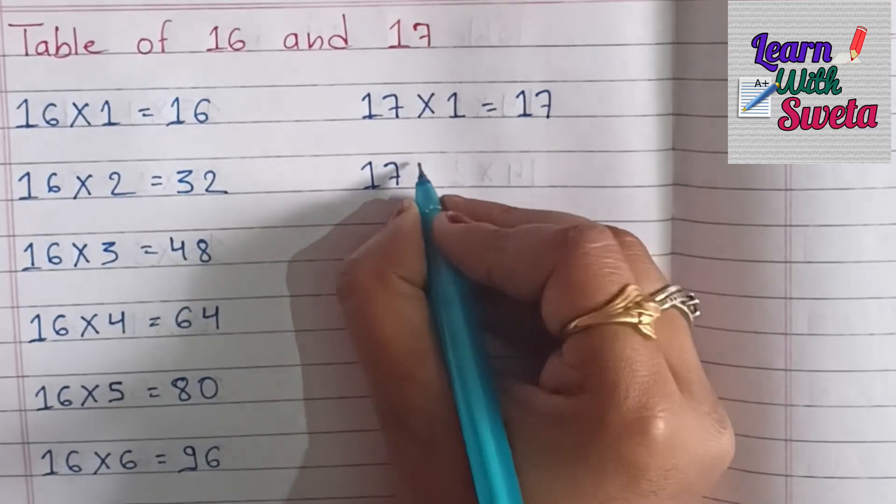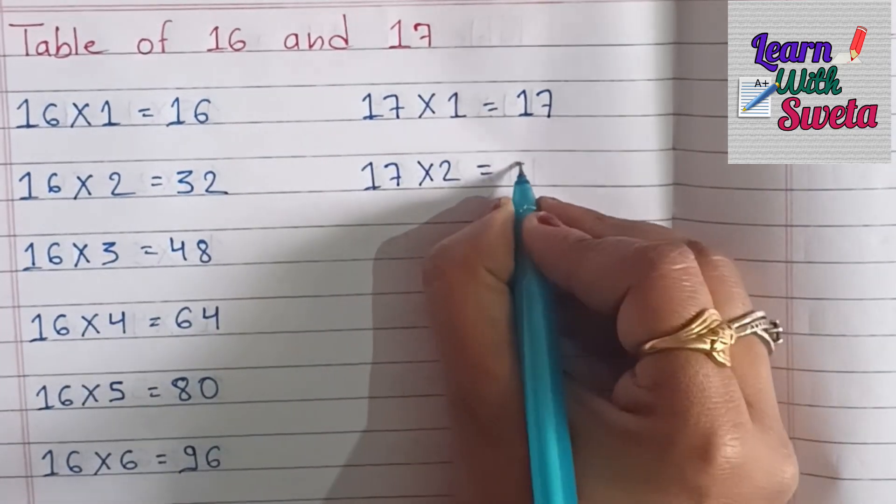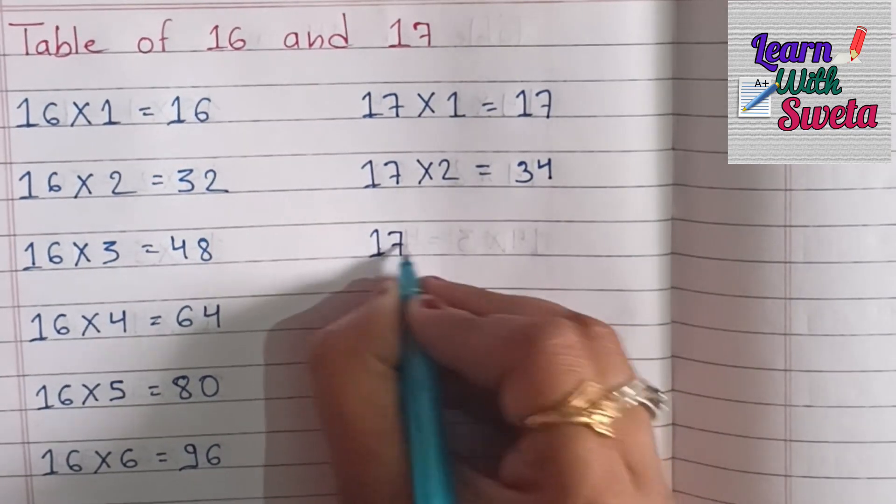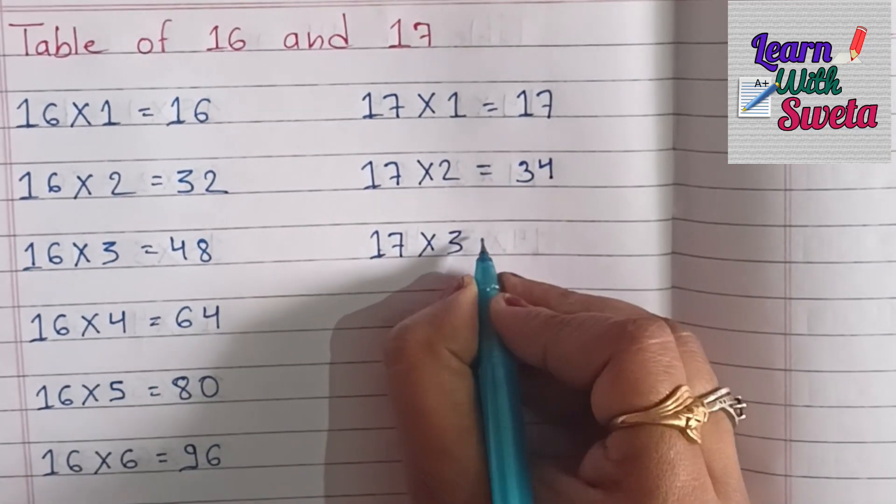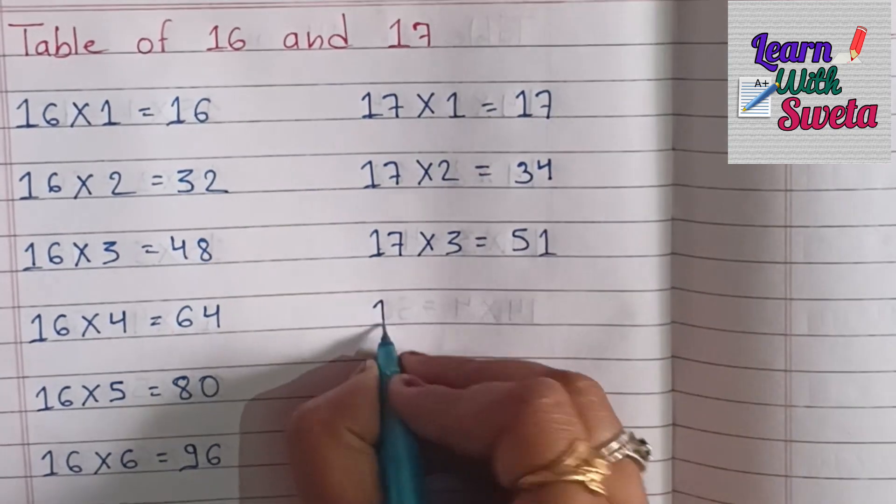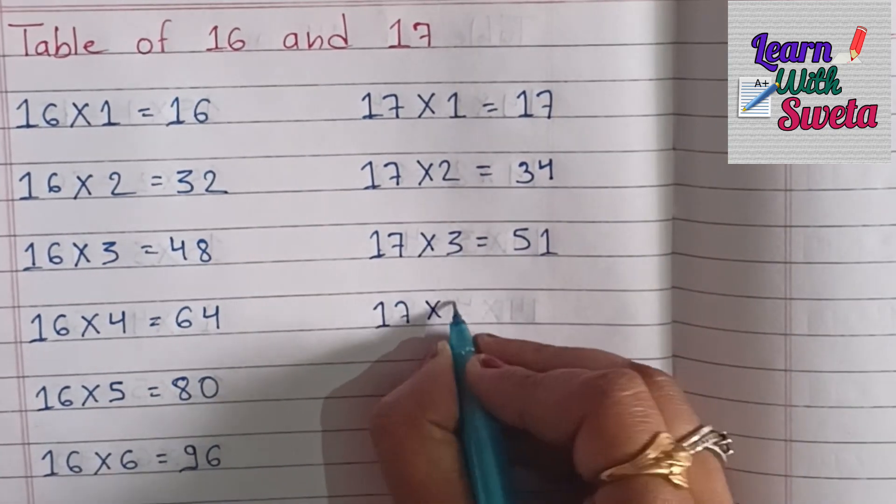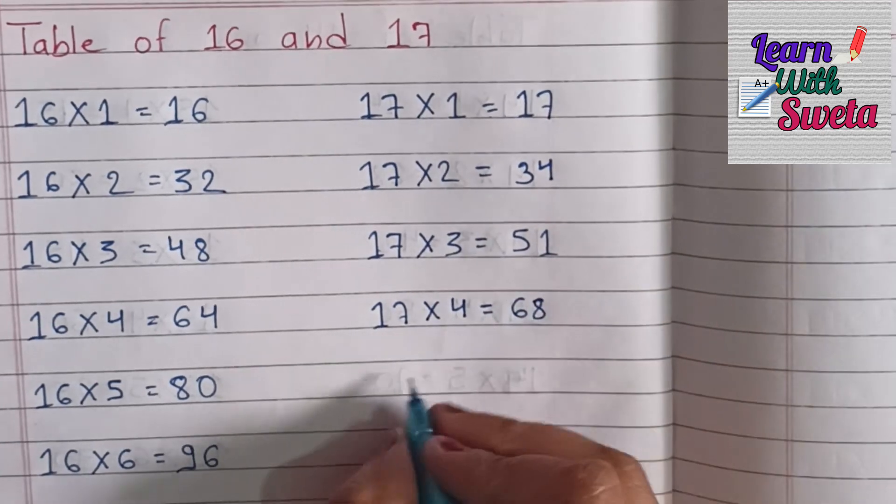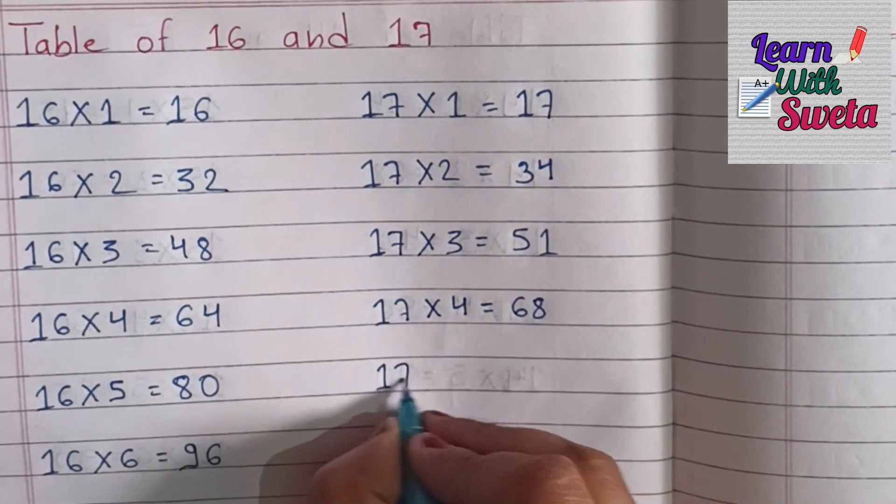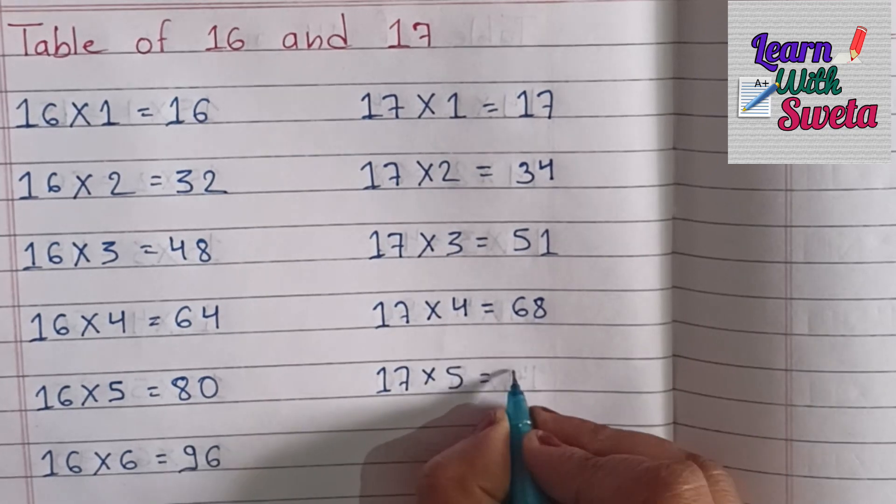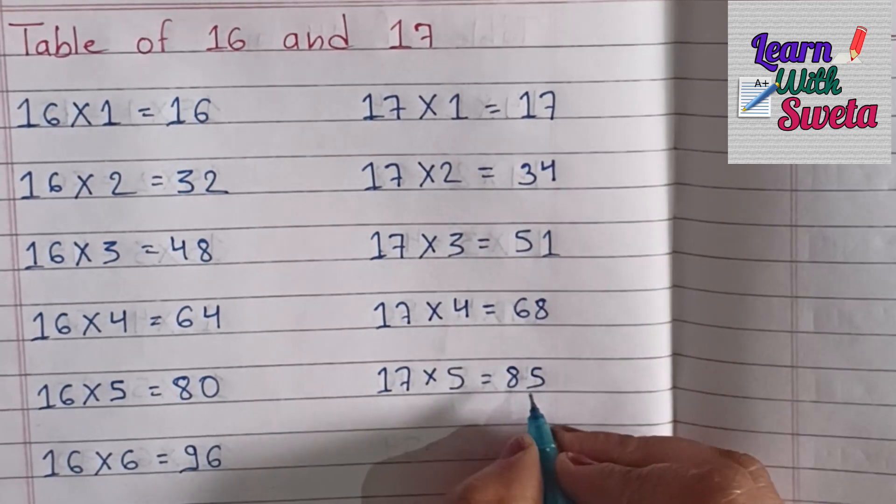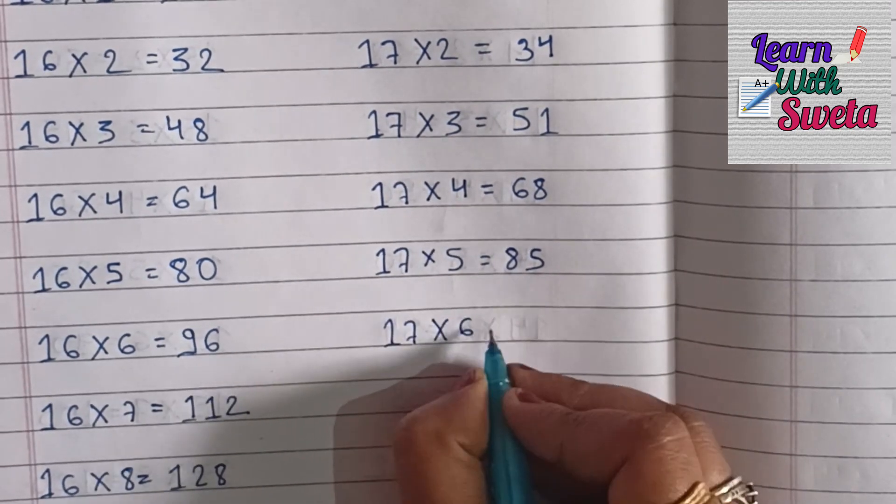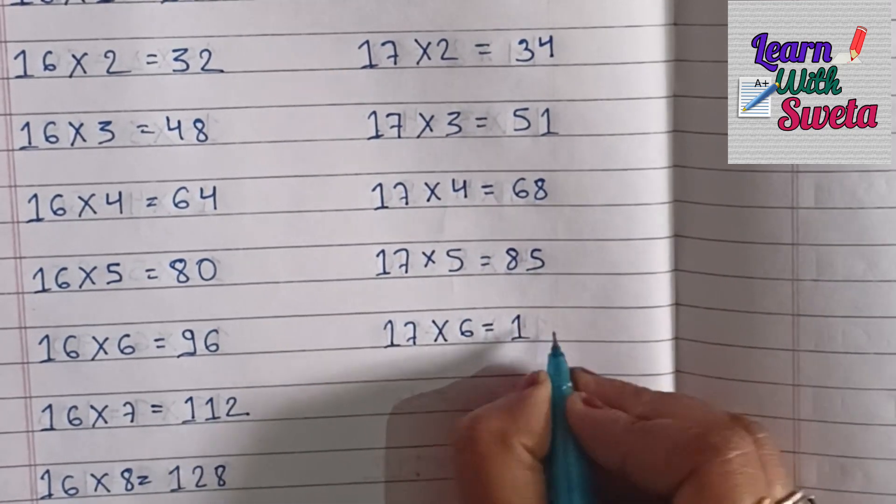17×2=34, 17×3=51, 17×4=68, 17×5=85, 17×6=102